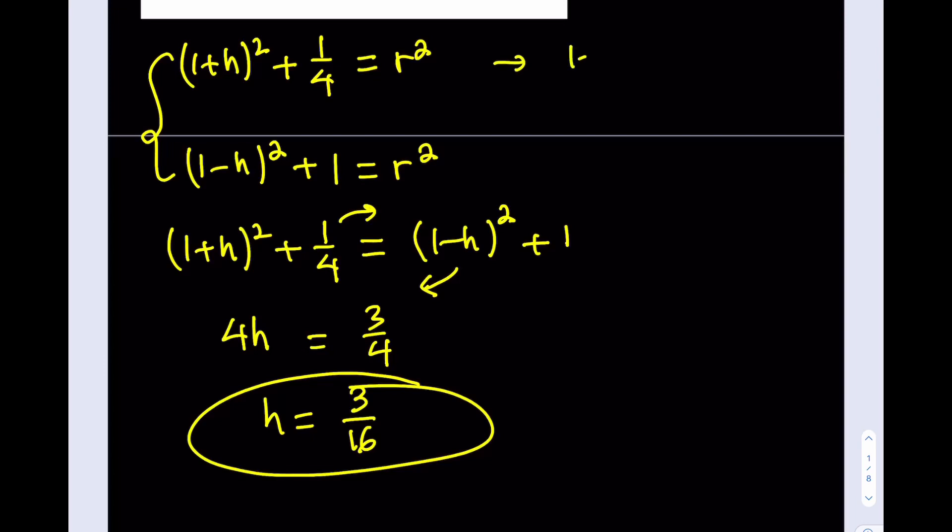For example, from the first equation, I can actually isolate the h as r² minus one-fourth and then square root both sides. Obviously, we're going to be getting two values here, but let's go with the positive one because 1 plus h needs to be a positive value, right? So I'm going to assume that this needs to be a positive. And then what I can do is I can actually subtract one from both sides and then this way I'll be getting h in terms of r.